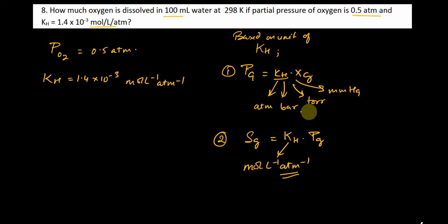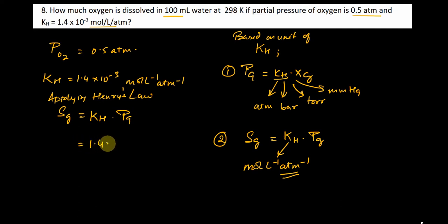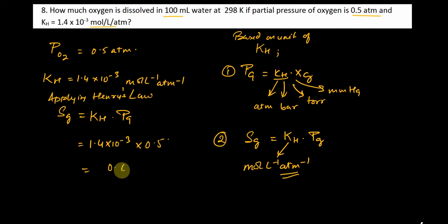Applying Henry's Law: solubility = KH × P_g = 1.4 × 10⁻³ × 0.5 = 0.0007 mol per liter. This is the amount dissolved per liter.